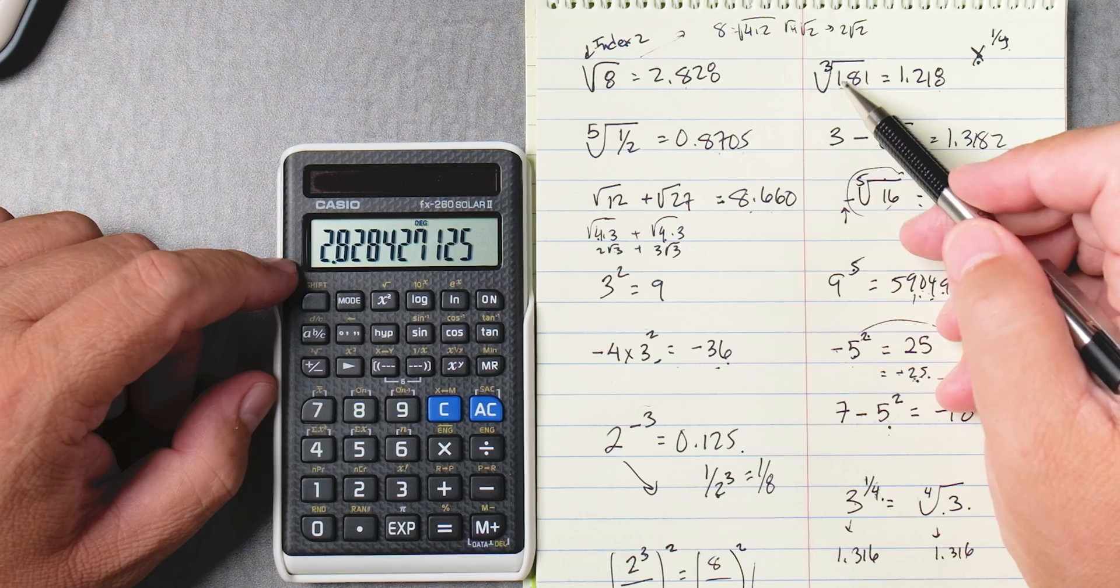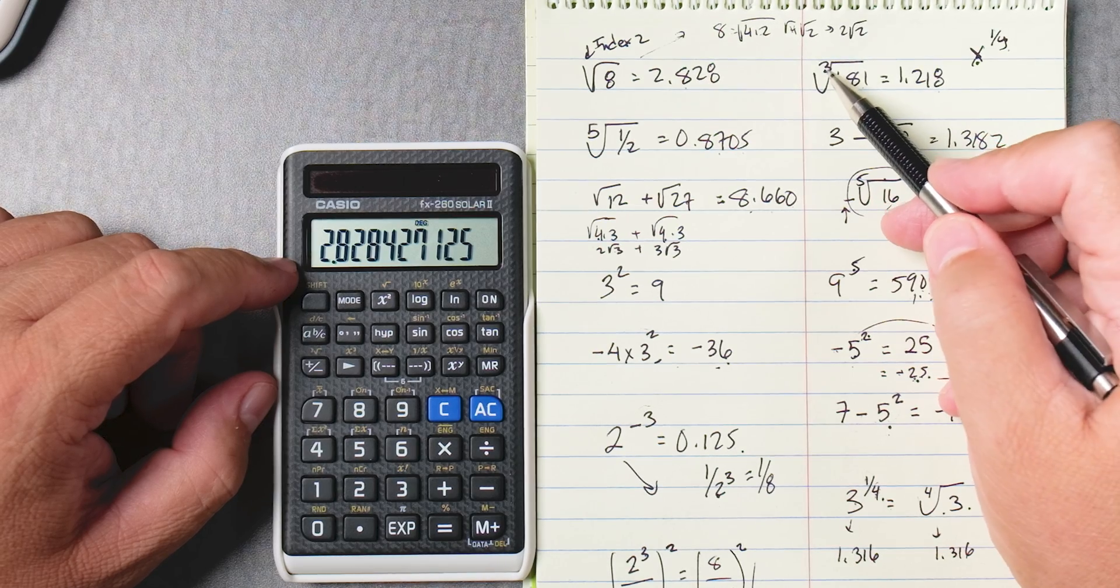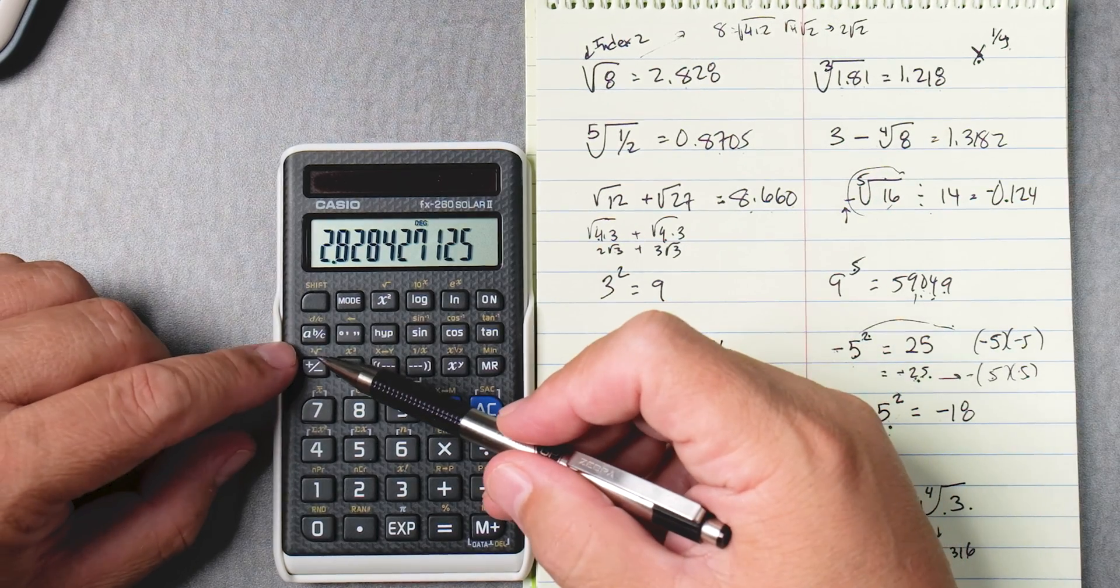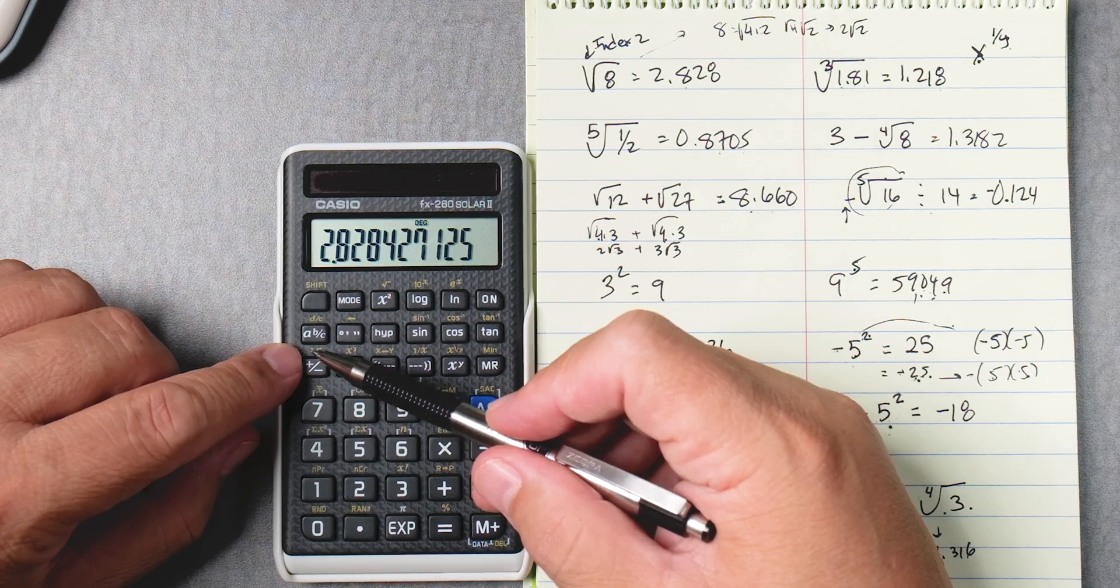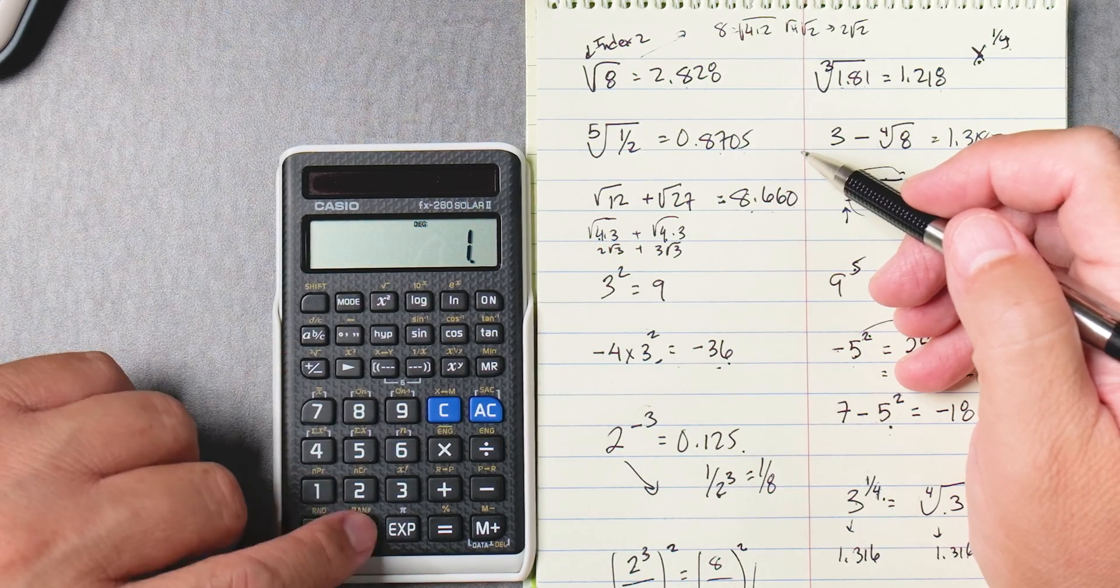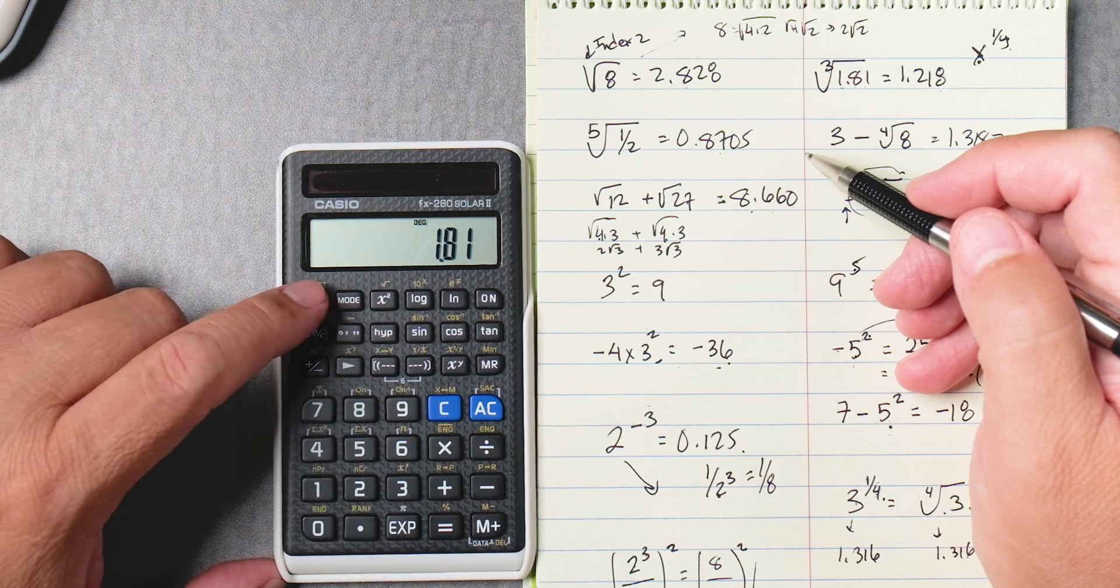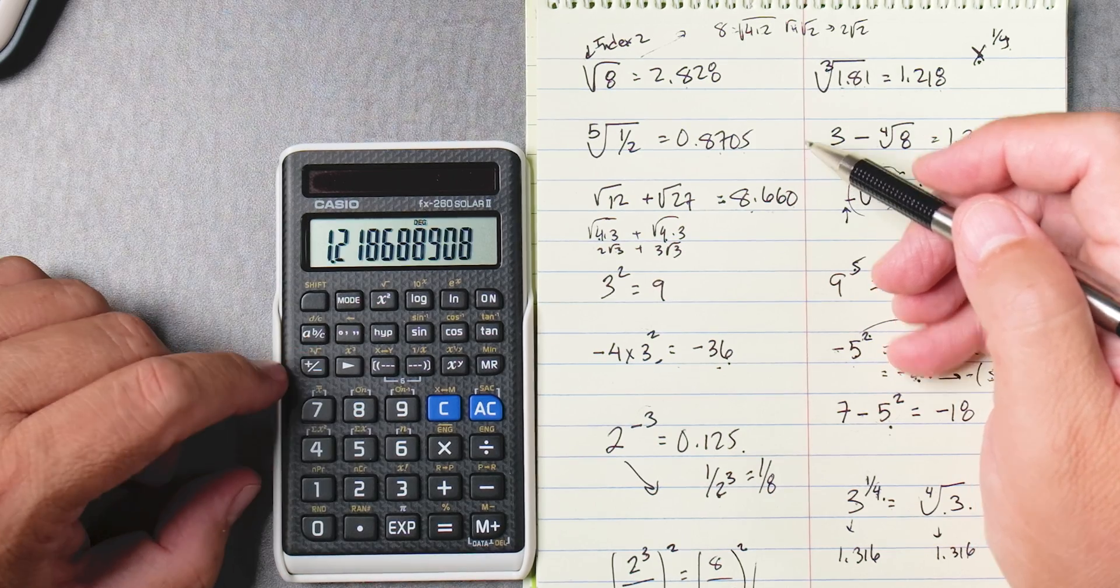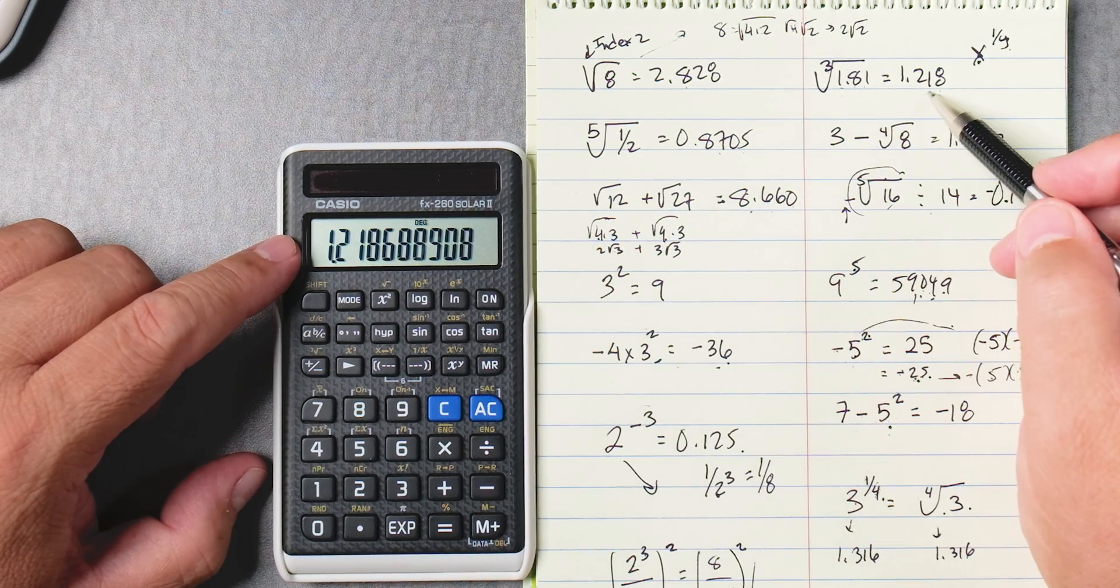This one's the third root of 1.81, so the third root, there is a third root key over here as you can see right there, where the plus or minus. So this one is 1.81 shift plus or minus key and it gives you 1.218.